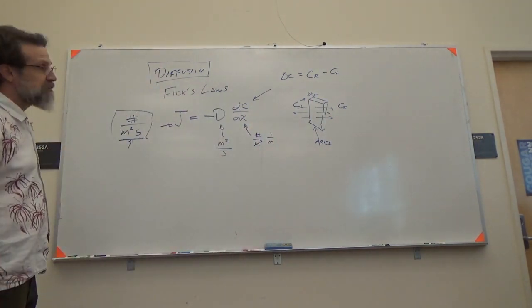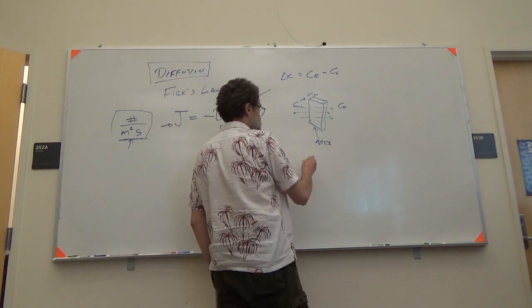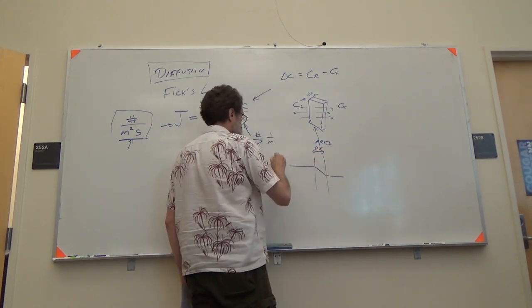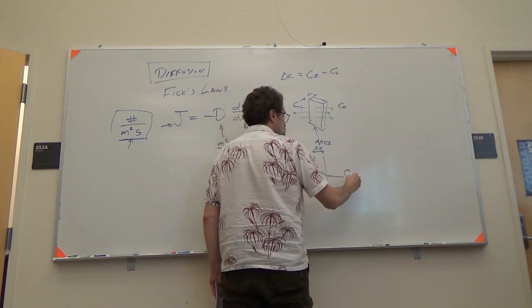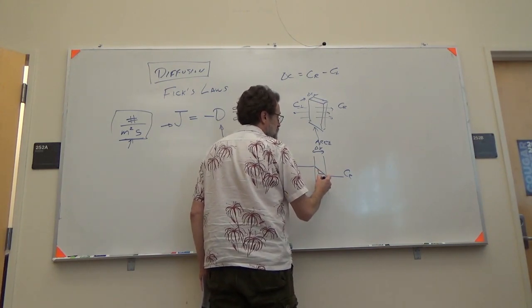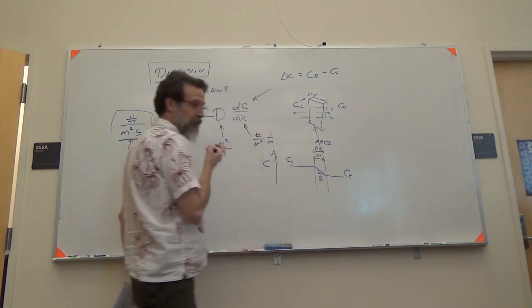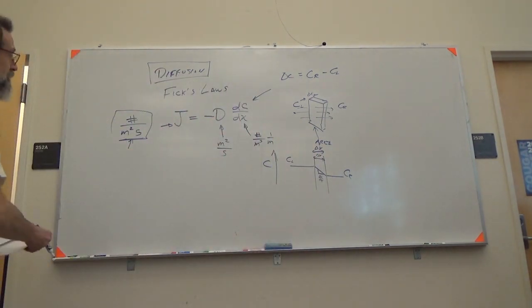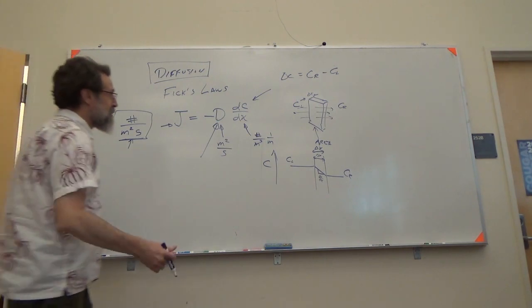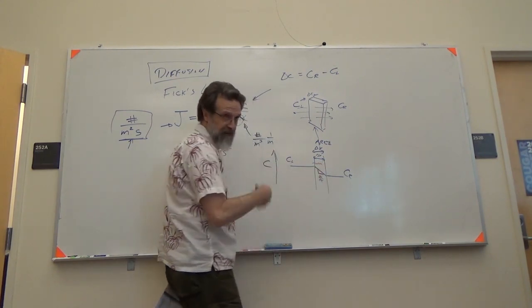So Fick's first law is used in the case of having a steady state flux. You can imagine this having some thickness delta X, your concentration C left and C right. And then you have your delta C over delta X as the slope. This diffusion coefficient, or diffusivity coefficient, is going to depend on the rate of atoms hopping from one site to the next. And there's different mechanisms for that.